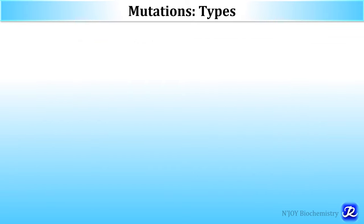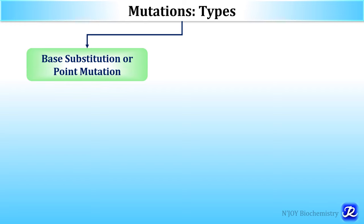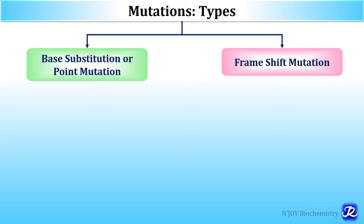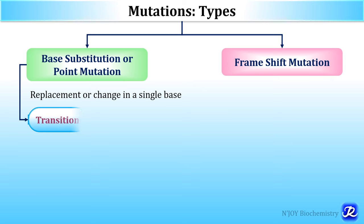What are the types of mutations? Mutation can be of two types: base substitution or point mutation, and frameshift mutation. In point mutation, there is replacement or change in a single base. Point mutation can be of transition type or transversion type.